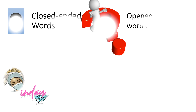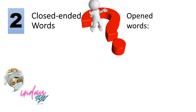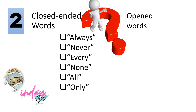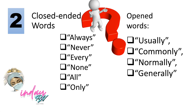The second strategy is closed-ended words versus open-ended words. Closed-ended words like always, never, every, none, all, and only often mean a definite or fixed meaning — eliminate these answer choices. Meanwhile, open-ended words such as usually, commonly, normally, and generally are possible correct options.